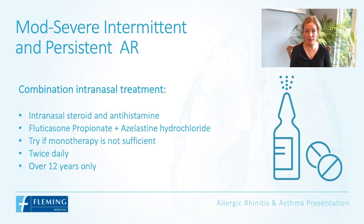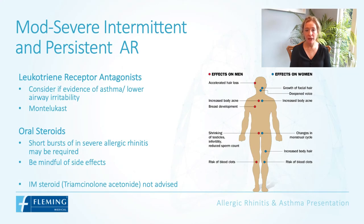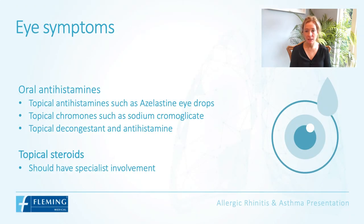If intranasal corticosteroid alone is insufficient, a combination intranasal steroid and antihistamine spray can be used — twice daily, suitable for those over 12. If the patient has asthma or lower airway irritability, a leukotriene receptor antagonist like montelukast can be considered. Oral steroids are rarely used, though they are used for asthma flare-ups. Intramuscular steroids were occasionally used pre-season in the past but are no longer advised due to steroid side effects.